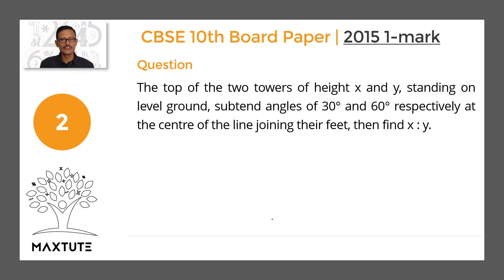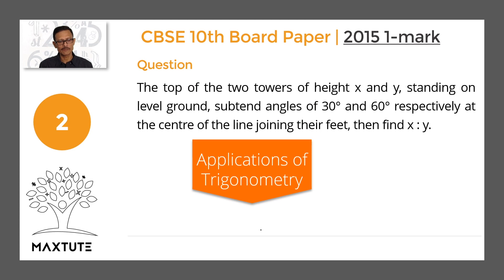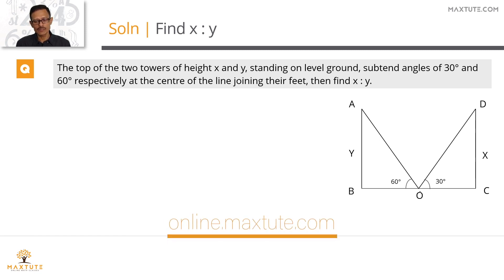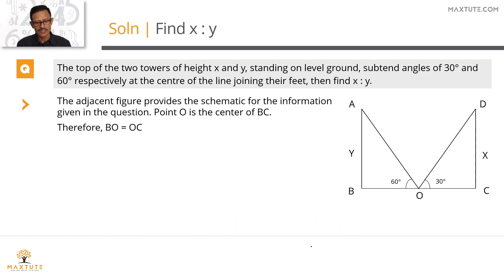Moving on to the second question, which is a little more difficult. It is from applications of trigonometry. The tops of two towers of height x and y standing on level ground subtend angles of 30 degrees and 60 degrees respectively at the center of the line joining their feet. We need to find the ratio x : y.